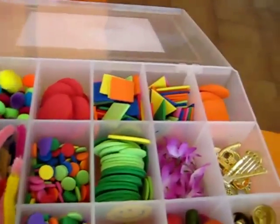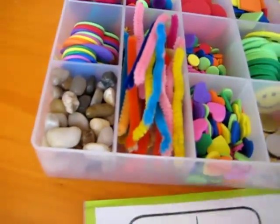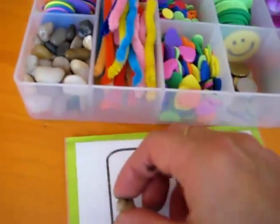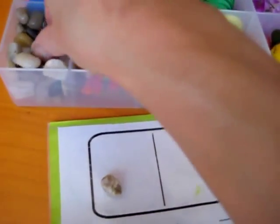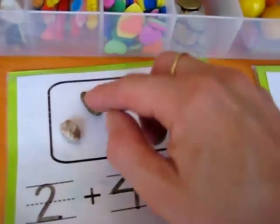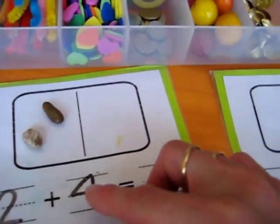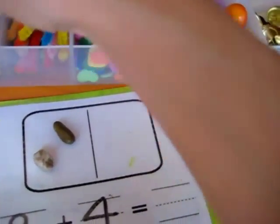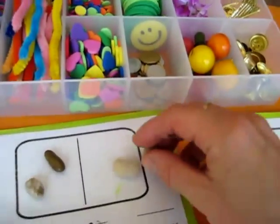So they look into the little box. What would I like to count today? Okay, let's do some little pebbles. So they put 2 in here because that's a number 2 plus 4. So they'll put 4 of the same one or they can choose a different object.